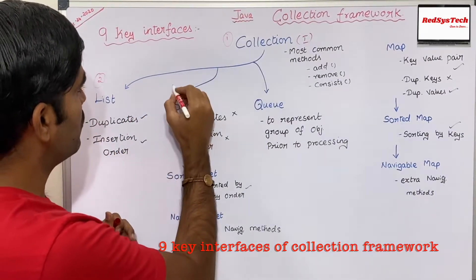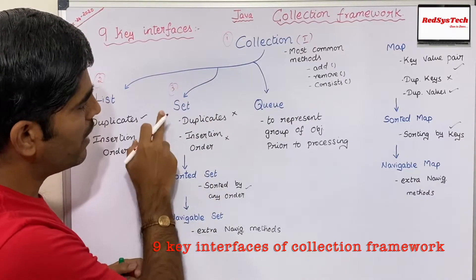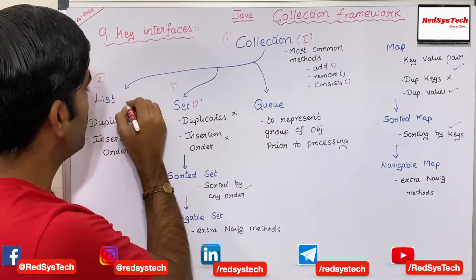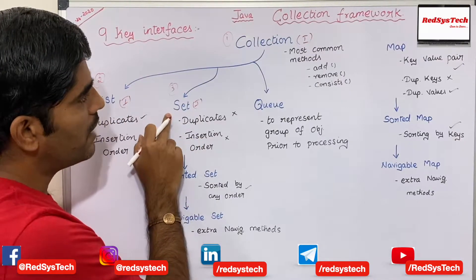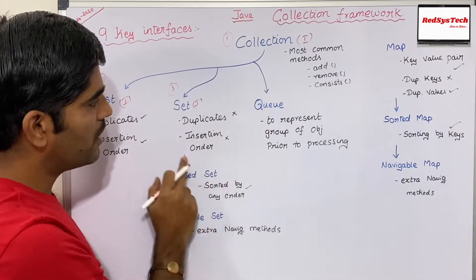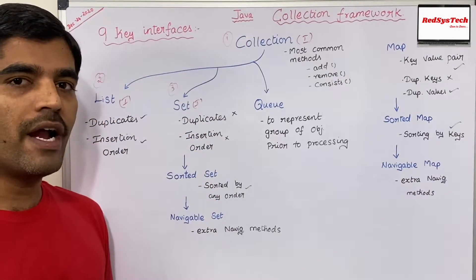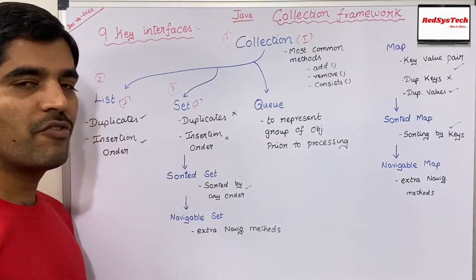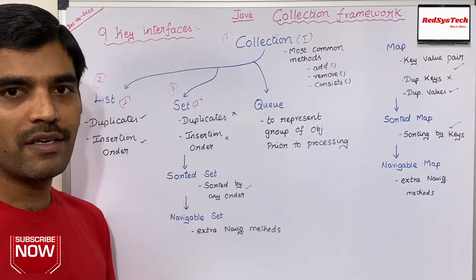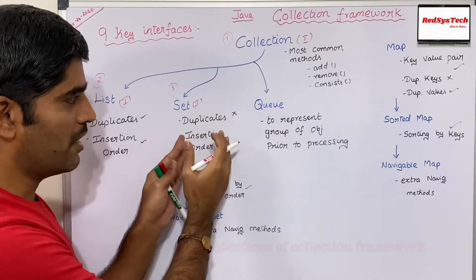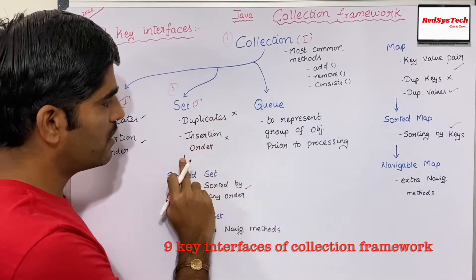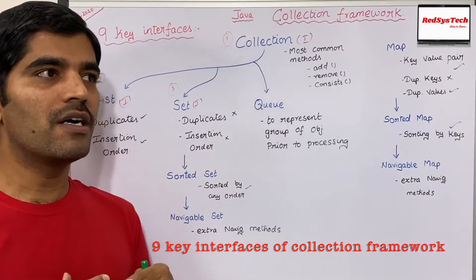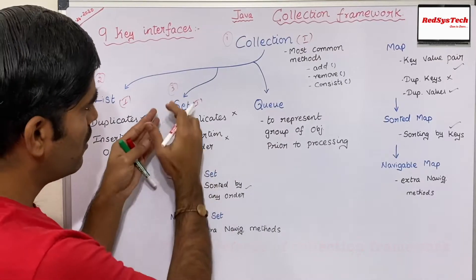The next one is Set, which is the third interface and also a child interface of Collection. The key feature of Set is that it does not allow duplicates. If you add an object and try to add the same object again, it won't allow it. So if your requirement says you should not have duplicate objects in the collection, then you have to choose Set. Additionally, Set does not maintain insertion order — it won't save the order in which you added the objects.